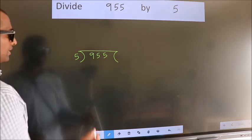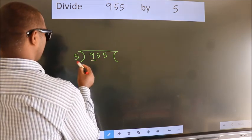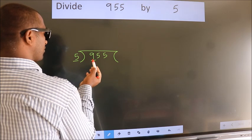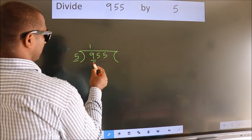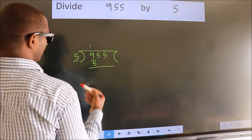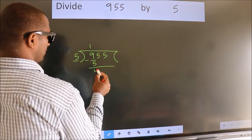Next. Here we have 9, here 5. A number close to 9 in 5 table is 5 once 5. Now we should subtract, we get 4.